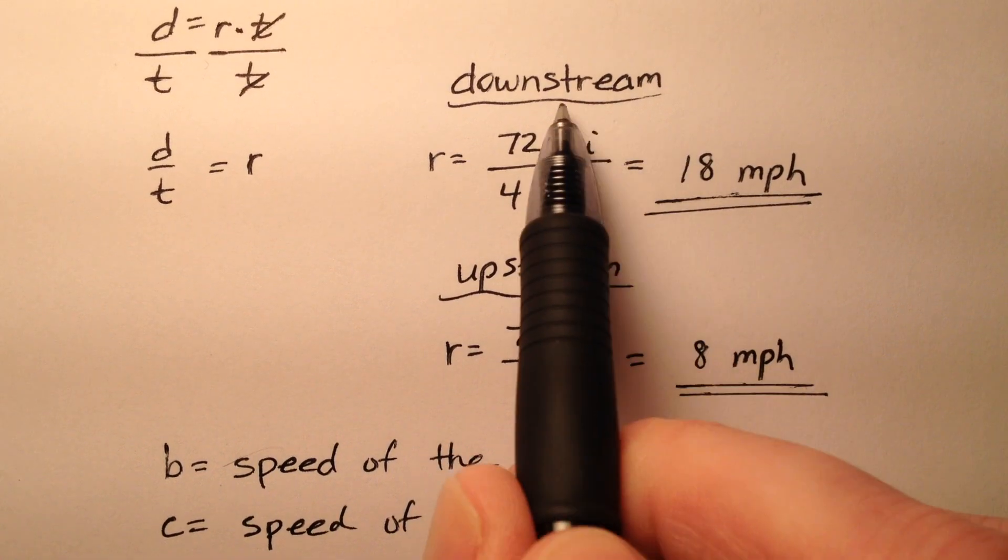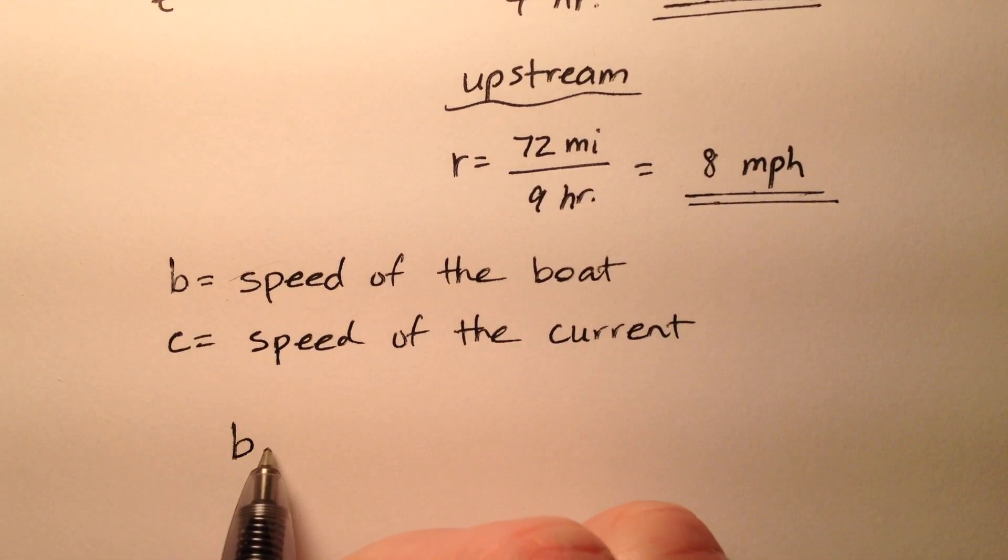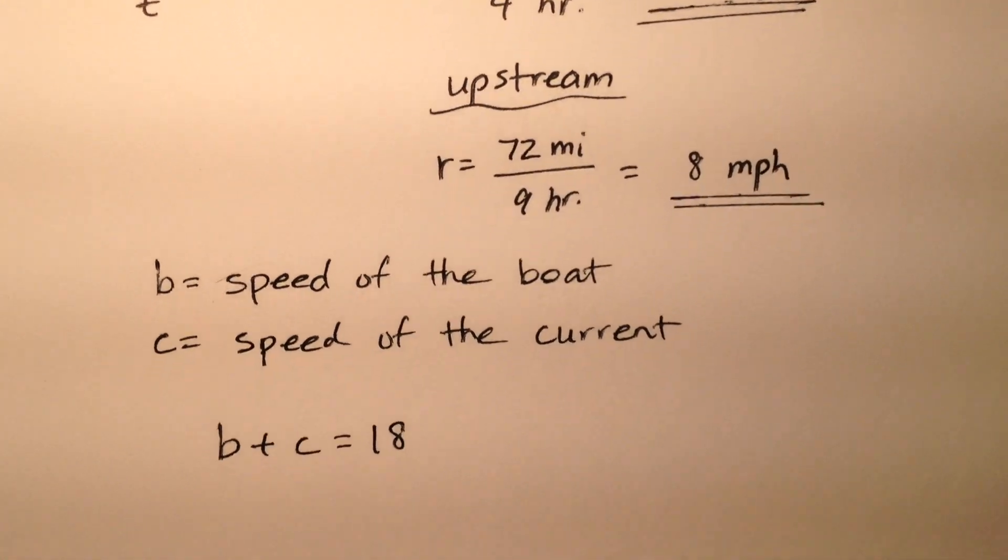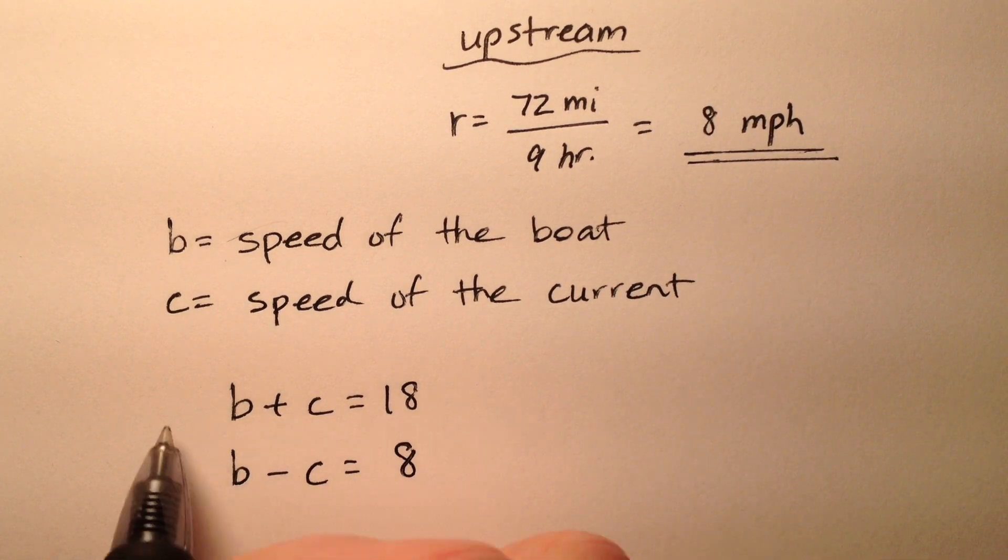So if downstream was 18 miles per hour, we know that's the boat plus the current, because the boat is flowing with the current. Upstream, however, is the speed of the boat minus the current, and that's going to be 8 miles per hour.